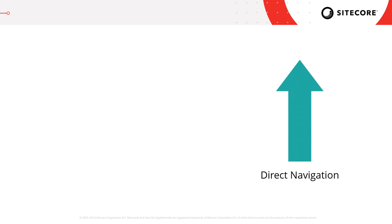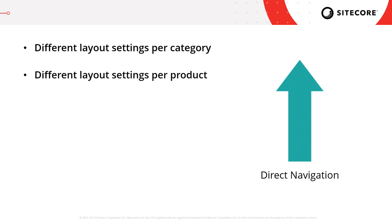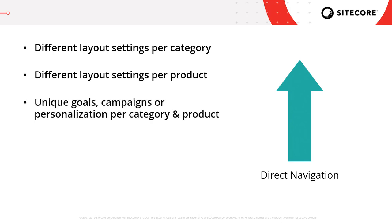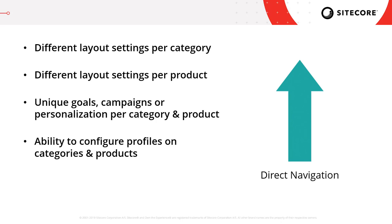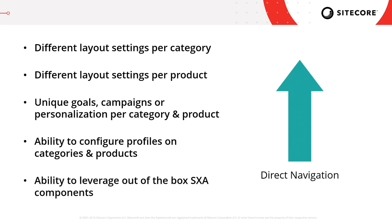So when would you want to use direct navigation over wildcard navigation? If you want to have a different layout for different categories — maybe your homeware category has a slightly different look and feel to your electronics category — then direct navigation would be the approach you'd choose. The same goes for products; maybe you want a slightly different look and feel for some products opposed to others. Also, if you want to vary the analytics data stored on your catalog pages — maybe different goals for different categories, or campaigns that only fire on certain products, or personalization rules that only fire on some products — direct navigation supports this. It also allows you to configure profiles on both your categories and products, which can then later be used for personalization and segmentation.